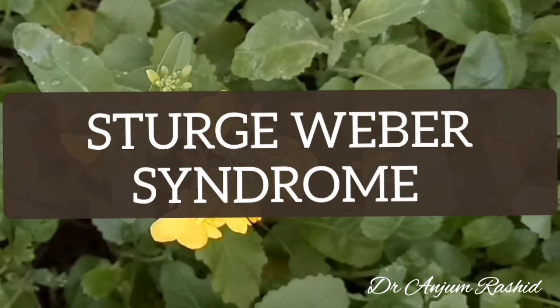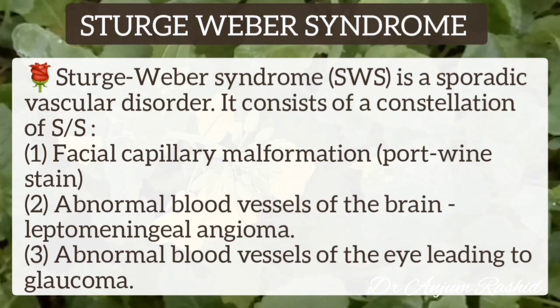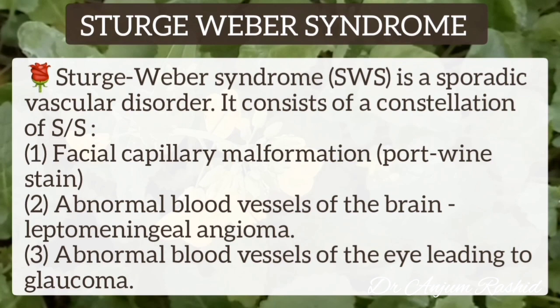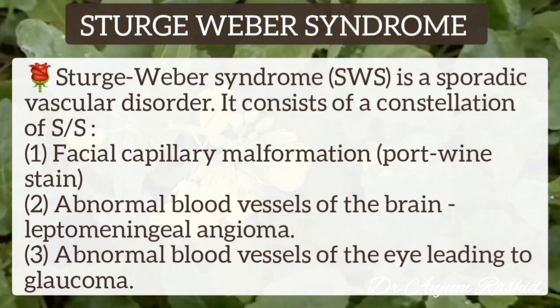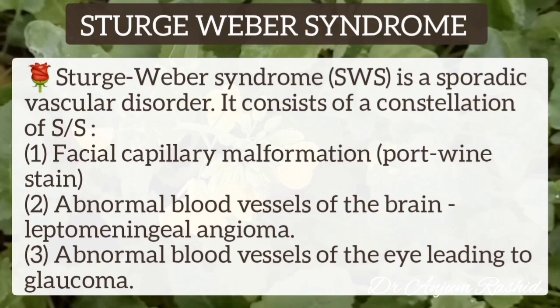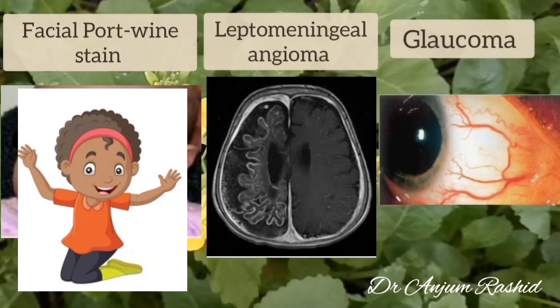Sturge-Weber syndrome is a sporadic vascular disorder. It consists of three signs and symptoms. First is the facial capillary malformation, also known as port-wine stain. Second is the abnormal blood vessels of the brain, that is the leptomeningeal angiomas. And third is the abnormal blood vessels of the eye leading to glaucoma. These are the three major features of Sturge-Weber syndrome.